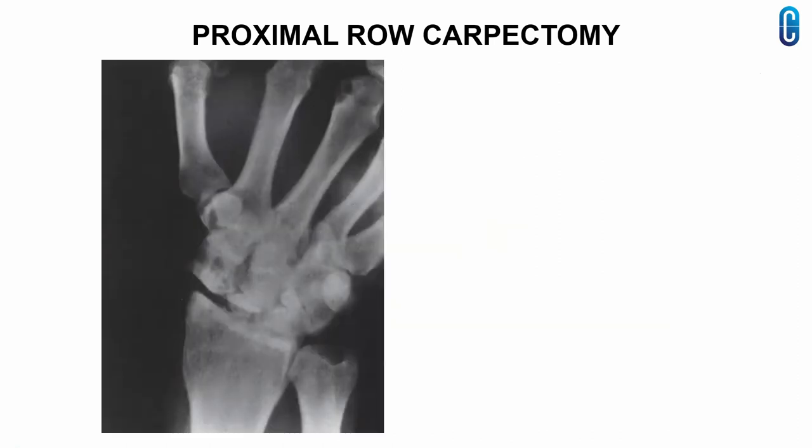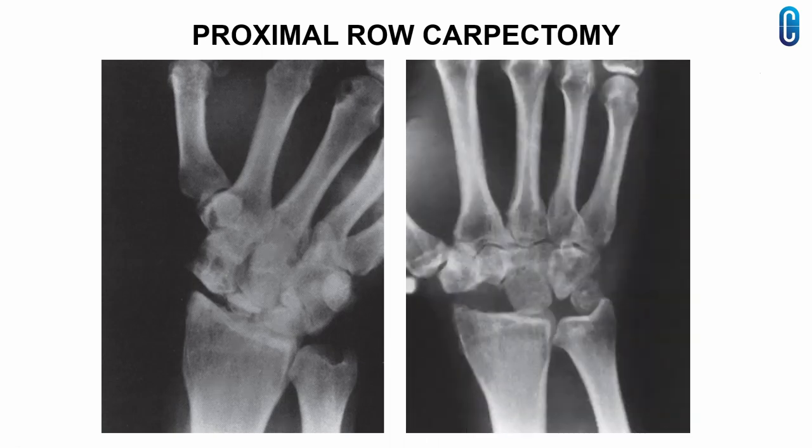The triquetrum is exposed between the 4th and 5th extensor compartments. An x-ray shows long-standing scaphoid nonunion with arthritis, osteonecrosis, collapse of the proximal pole, and settling of the capitate into the proximal row. A follow-up x-ray shows the result after proximal row carpectomy with radial styloidectomy.